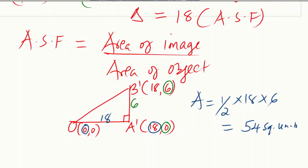To summarize the sketch approach: by looking at the coordinates of the image triangle OA'B' and doing a rough sketch, you can identify that the vertical displacement — which is the height of the triangle — is 6, and the horizontal displacement — the base — is 18. This area of 54 square units belongs to the image triangle OA'B'.